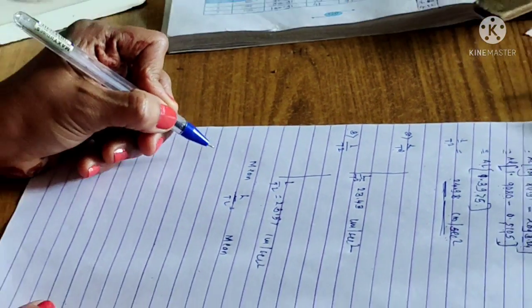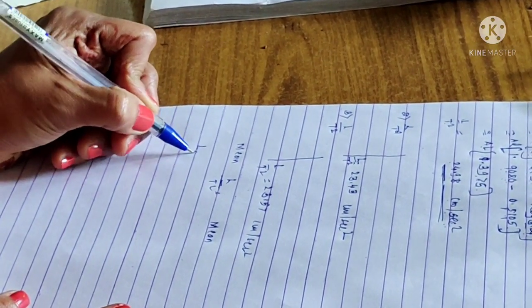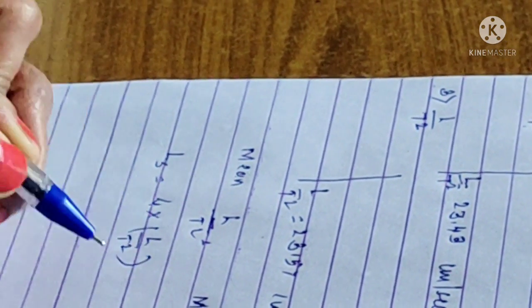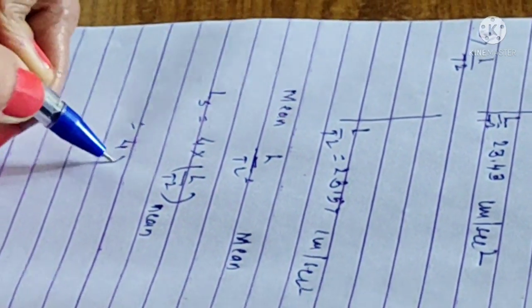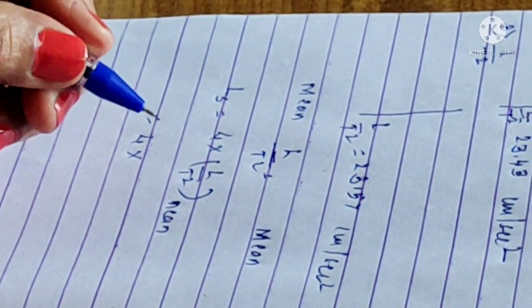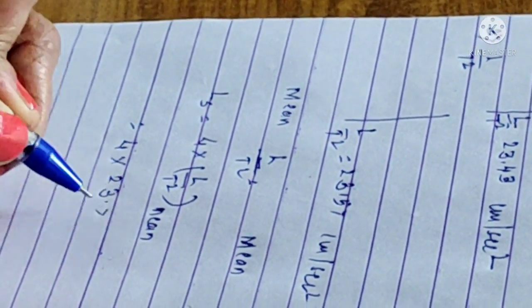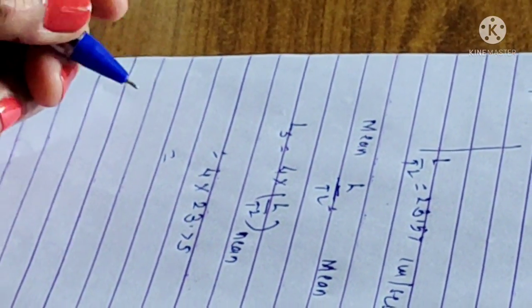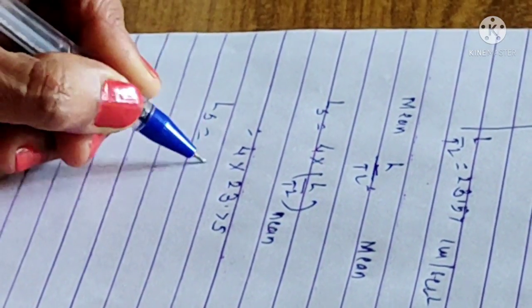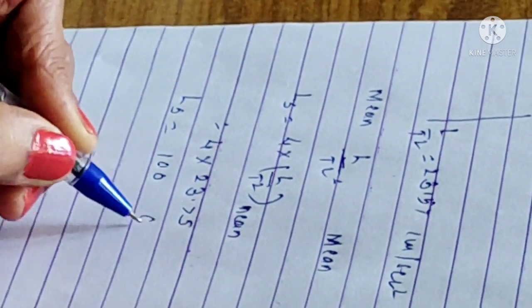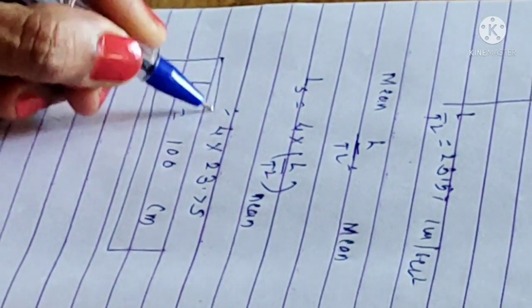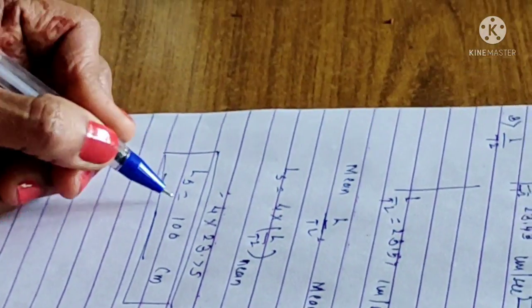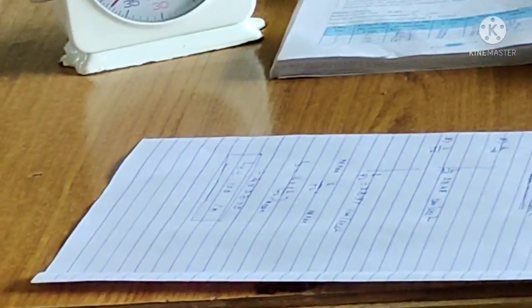Final result: length of seconds pendulum, L is equal to 4π² into L by T square mean. That is 4π² into 23.75, and when calculated, the final answer Ls is around 100 centimeters. The length of seconds pendulum is 100 cm.